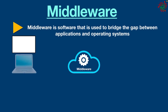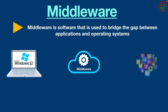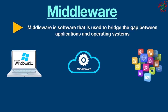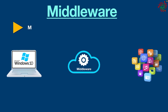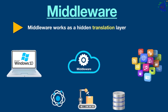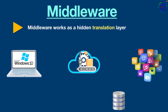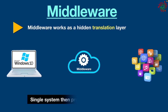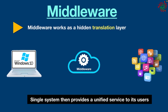Middleware sits between an operating system and applications that run on it to provide a way of communication and data management. This is best for applications, otherwise they wouldn't have any way to exchange data with software tools and databases. Basically, middleware works as a hidden translation layer that connects diverse technologies, tools, and databases so that you could integrate them seamlessly into a single system, which then provides a unified service to its users.